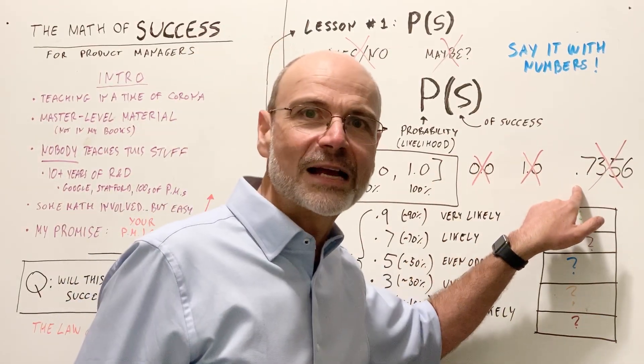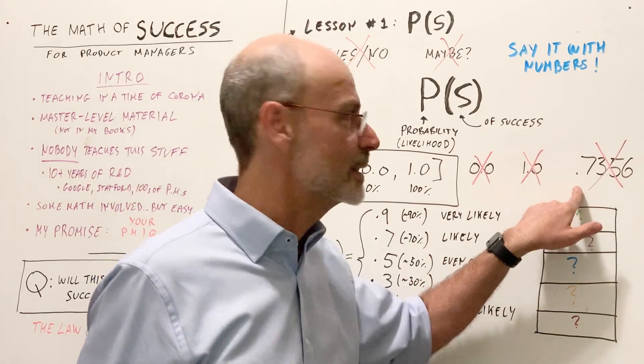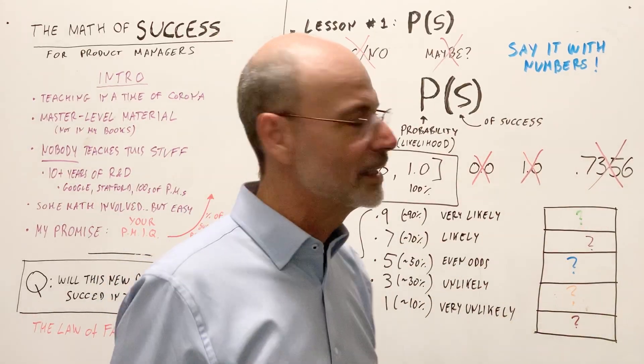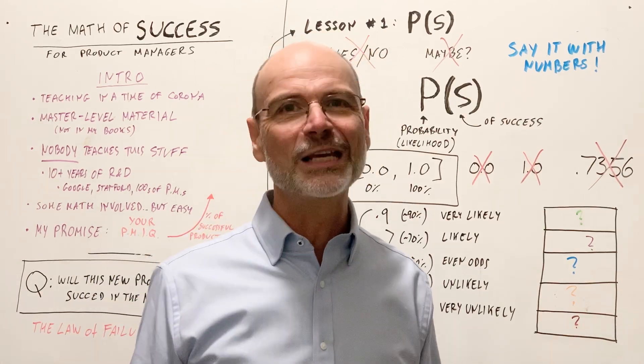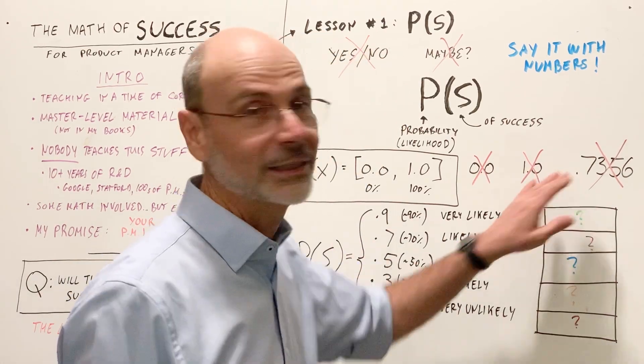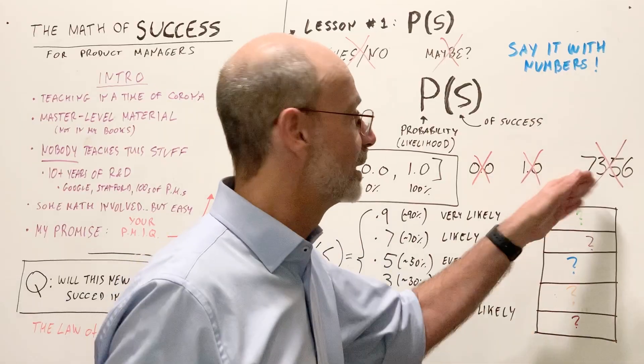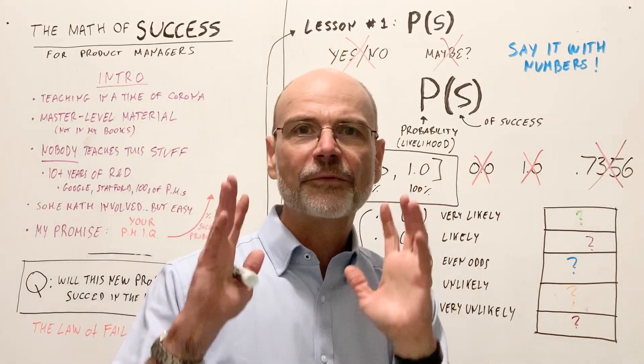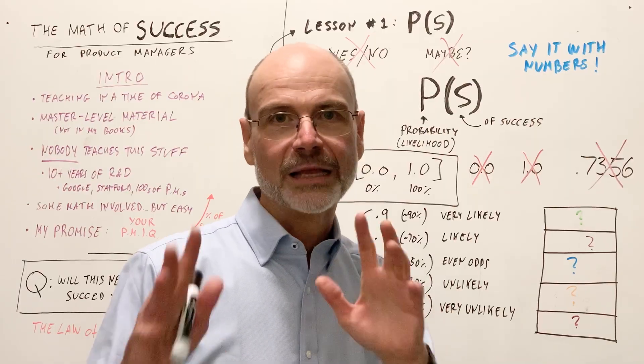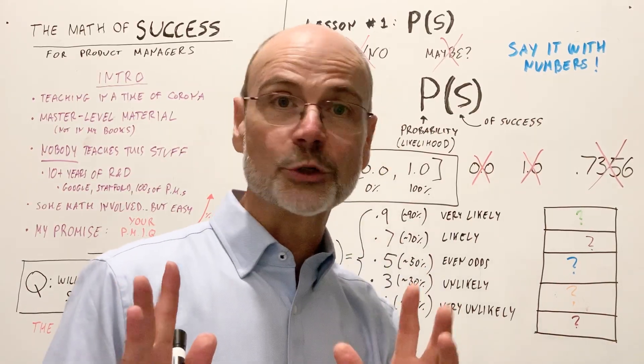So we cannot give numbers that are absolute. Remember, we cannot tell you it's a 0.0 chance of success or a 1.0 chance of success. No yes or no answer. But also, we cannot give answers like this. What's the probability of success? Well, it's a 0.37356 or 73.56%. We cannot do that. It's ridiculous. And yet, you'll be surprised how many times I see this level of significant digits. You cannot do that.